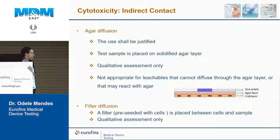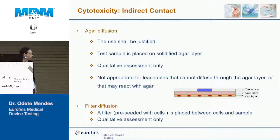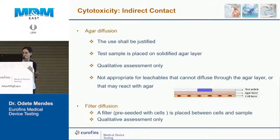For indirect contact tests, if the device might damage cells by its physical presence rather than by what it leaches, an agar layer is placed between the test article and the cells, ensuring any cytotoxicity is due to leaching from the device. A paper filter can also be used between the cell layer and the test article. Both of these provide qualitative assessments.